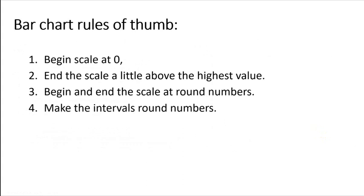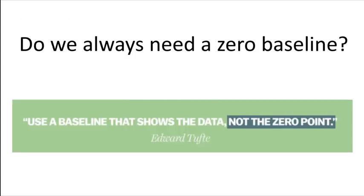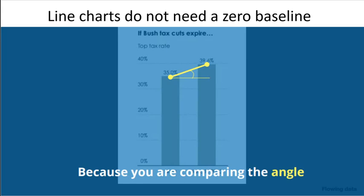Bar chart rules of thumb: begin the scale at zero — period. You should end the scale a little above the highest value, with something slightly higher than the tallest bar. The beginning and ending values on the scale axis should have round numbers, and the intervals should be round, not funky fractional things. Do we always need a zero baseline? No — don't become a slave to the zero point. Line charts don't need a zero baseline because when we read line charts, we're comparing angles, so we're not misleading people.